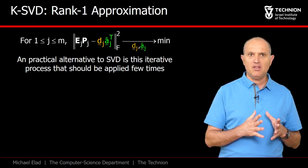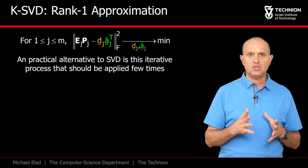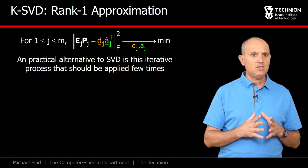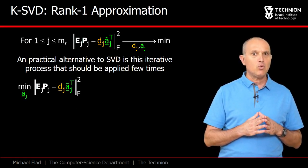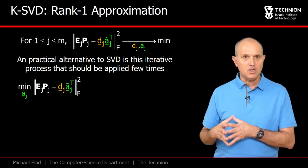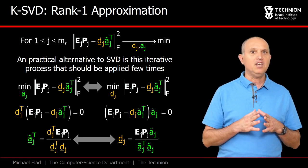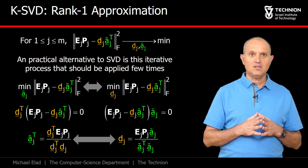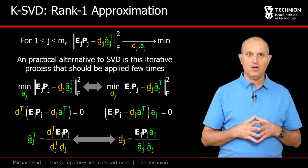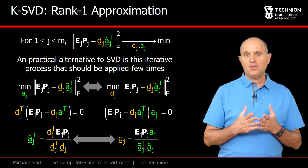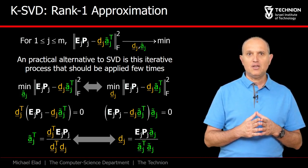While we keep mentioning the SVD for handling the rank-1 approximation task, a simple alternative can be suggested in which we update D1 while freezing A1 transposed, and then update A1 transposed while keeping D1 fixed. Each of these is simply least squares with a closed form update formula. In practice, two or three such rounds are sufficient to get the necessary accuracy.